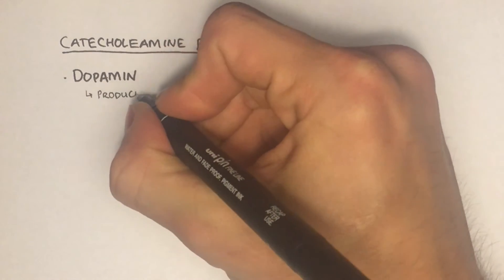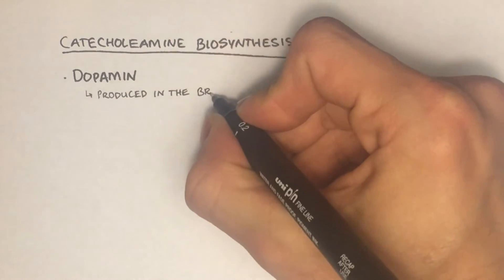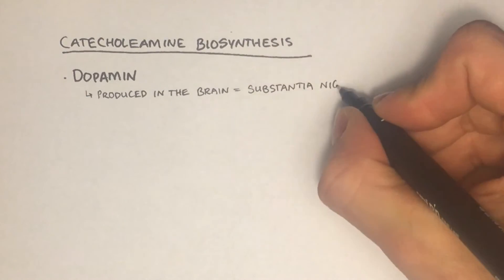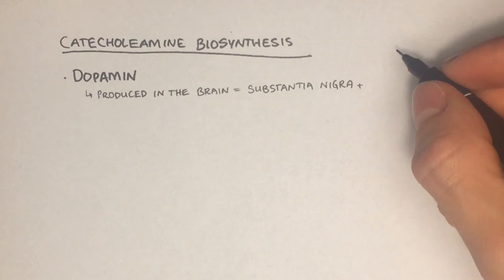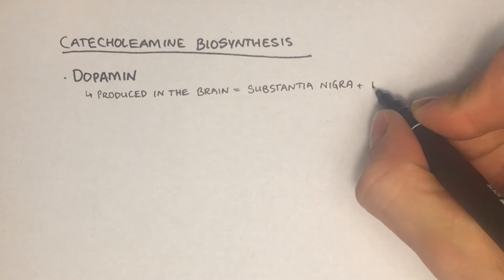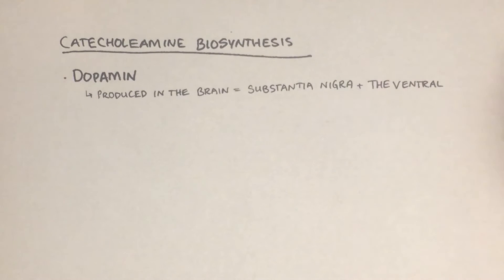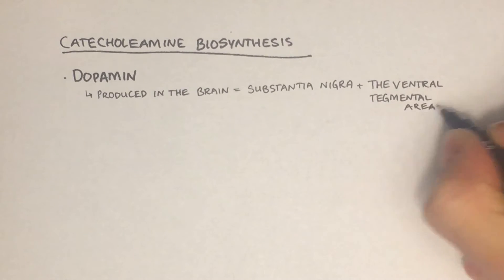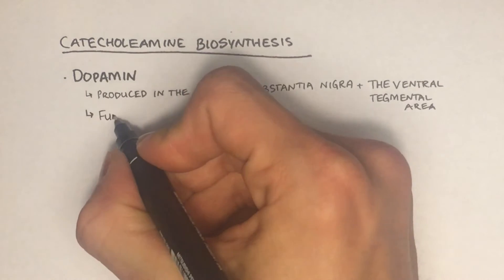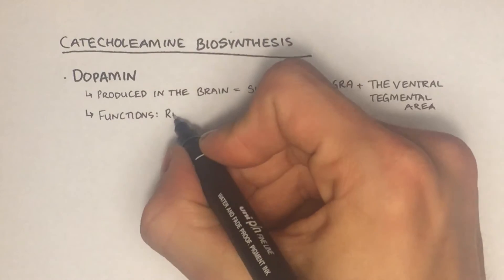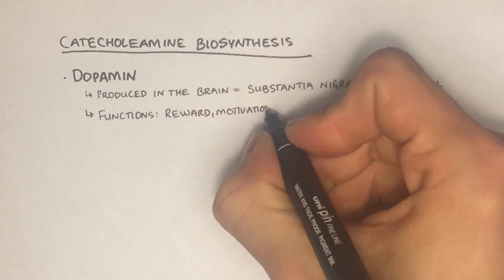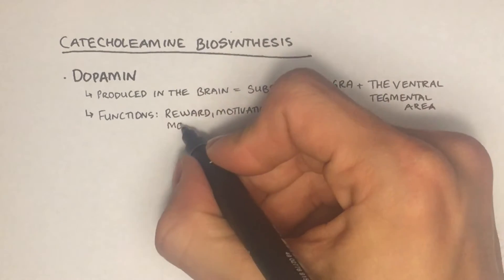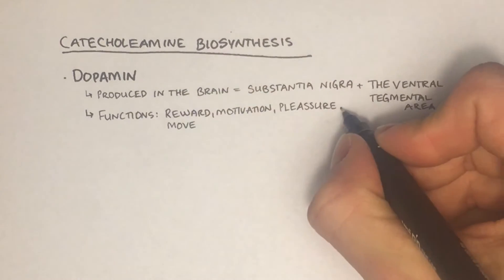The first one in the biosynthesis of catecholamines is dopamine. Dopamine is produced in two regions of the brain. It is produced in the substantia nigra where it is transported to the striatum by the nigrostriatal pathway, and it is also produced in the ventral tegmental area where it is transported to the prefrontal cortex by the mesolimbocortical pathway.